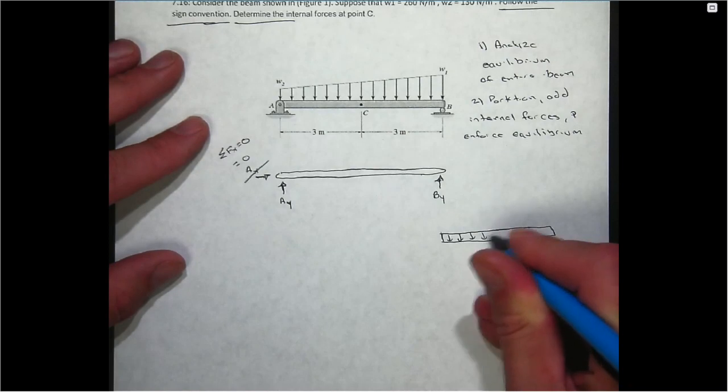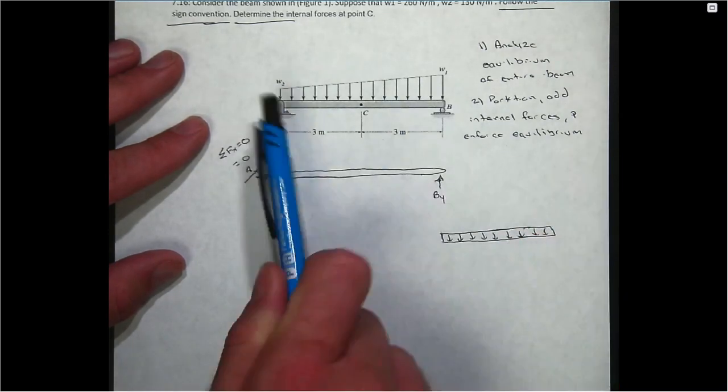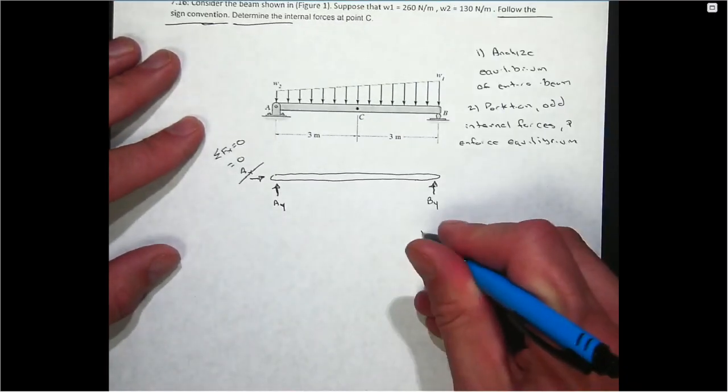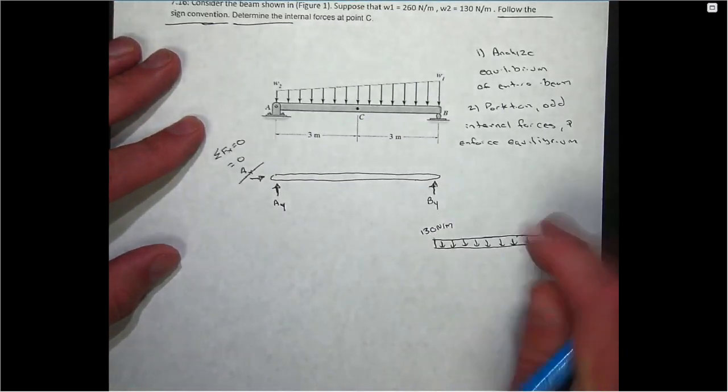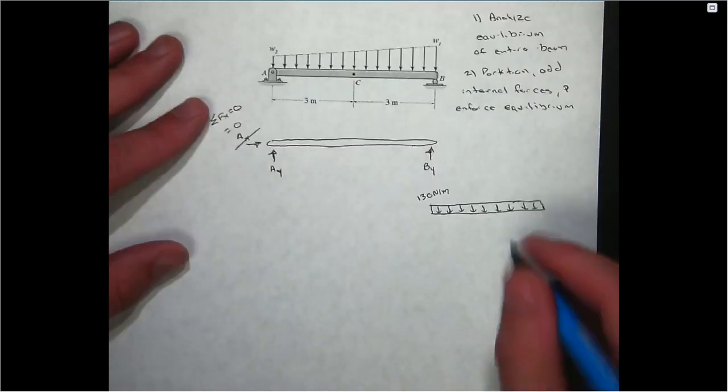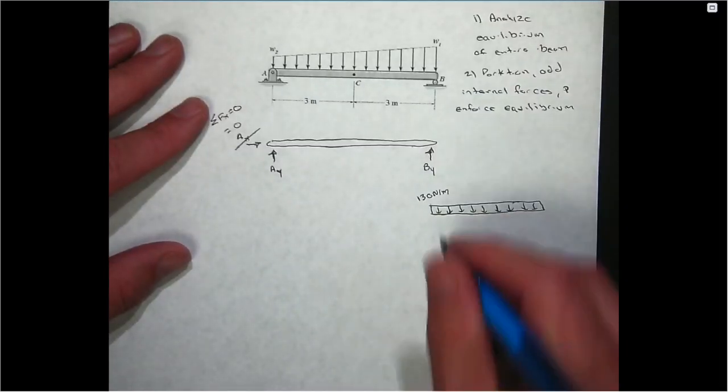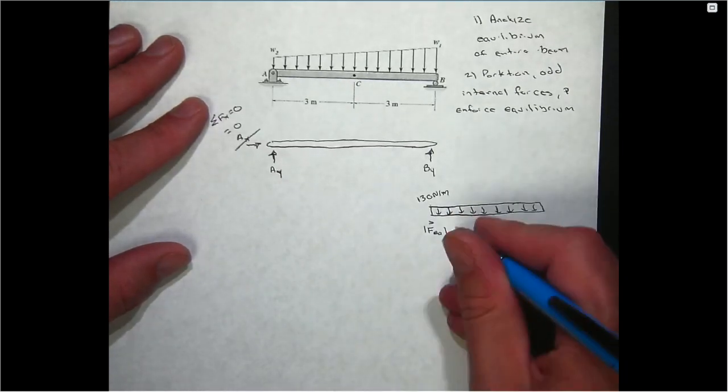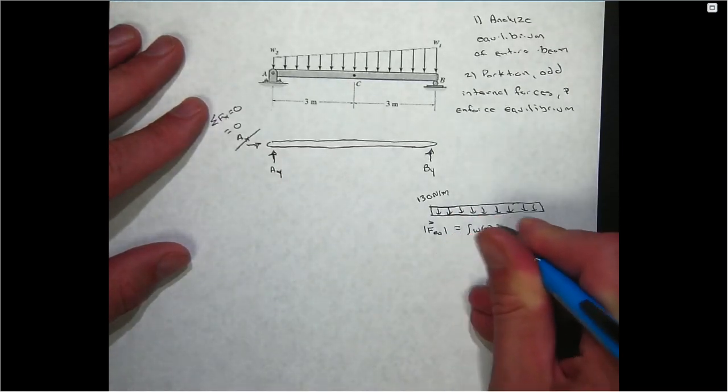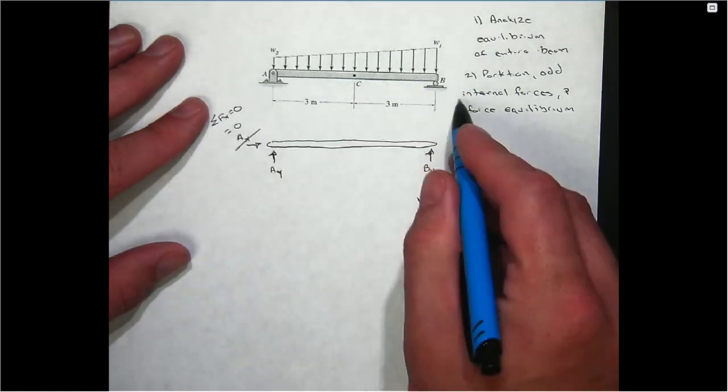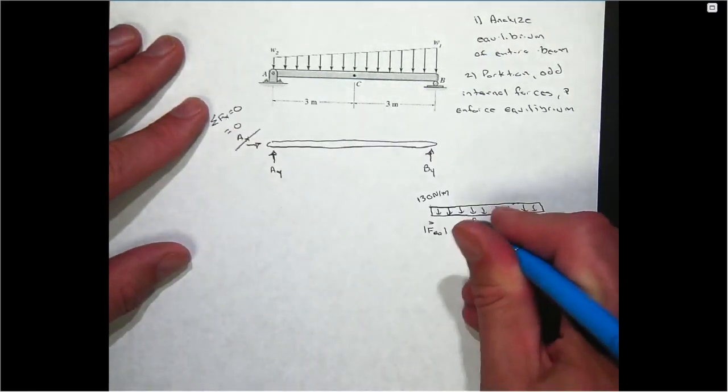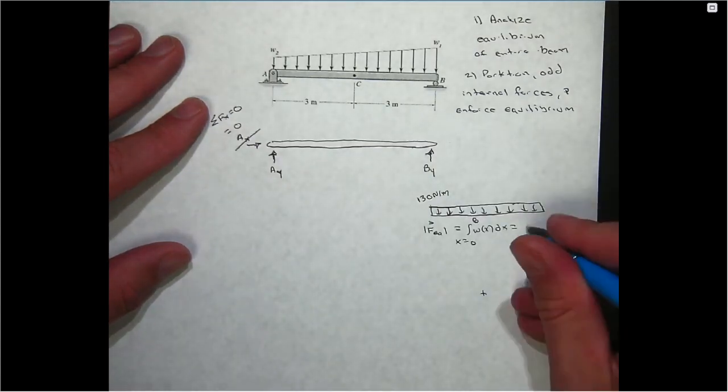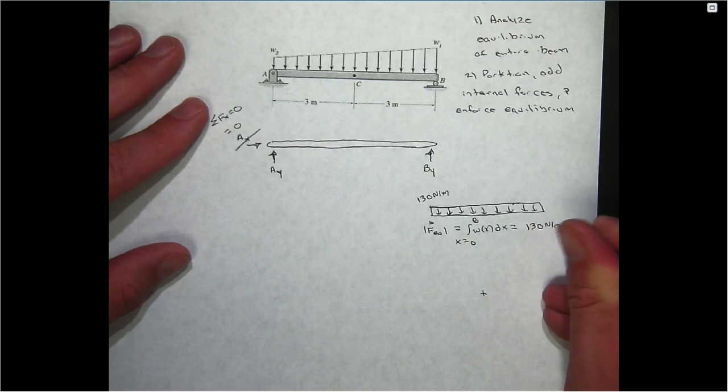You determine the integral of the distribution in order to determine the magnitude of the equivalent load. The easiest way to do it in this case is to model the distributive load as having a rectangular component and a triangular component. I'll do the rectangular component first. The reason you have to do that is if you notice, even on the left end of the load, before it increases, that distribution has a value of 130 newtons per meter.